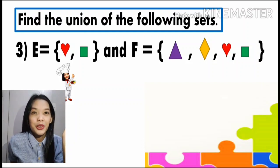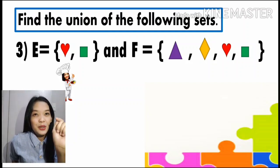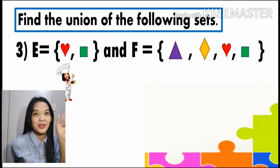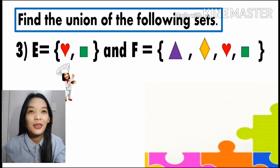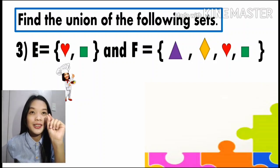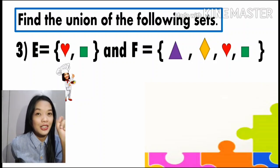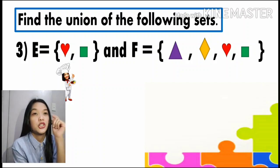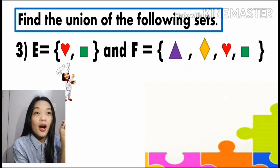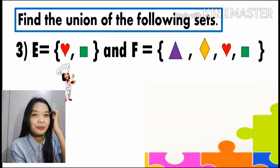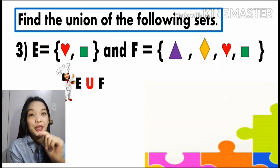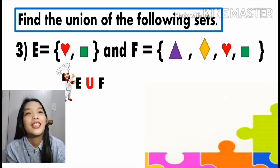Let's have example number three. As you observe, the elements are not numbers — they are shapes. Set E has the following elements: heart and square, while set F has the following elements: triangle, triangle, diamond, heart, and square. Now what will be our E union F? So let us write the elements.